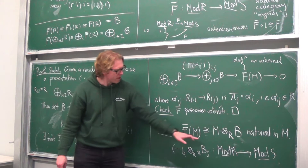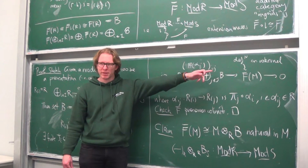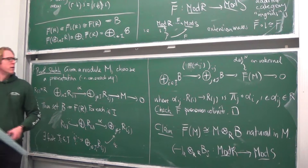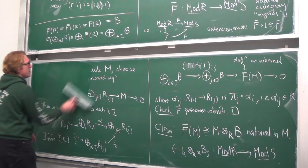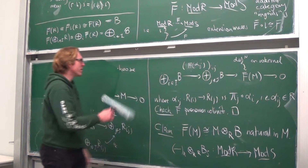I argued these two descriptions were the same using the universal property, but our intuition will work better if we can look at this quotient construction and just see why it has to be the tensor product. Let's look at that quotient. The tensor product is usually constructed as a quotient of a free module modulo relations, so let's look at that and see the same story.